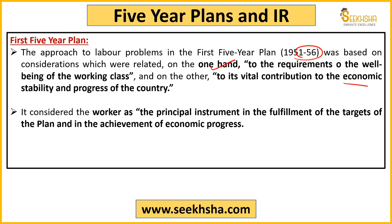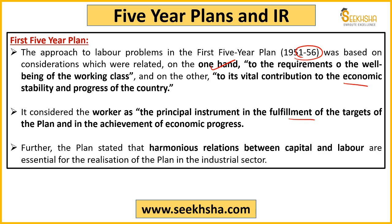तभी हमें economic progress मिलेगी अगर worker satisfy होगा और अपनी efficiency के साथ काम करेगा। Plan ने बोला कि worker ही principal instrument है plan के targets fulfill करने का और economic progress achieve करने का। यह directly exam में पूछा जाता है — 'Which five year plan stated that the principal instrument in the fulfillment of the targets of the plan and in the achievement of economic progress is the worker?' — Answer: First Five Year Plan।